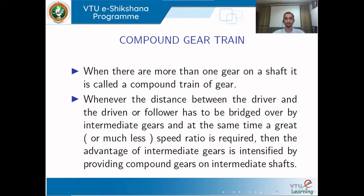In a compound gear train, when you need to transmit power from one shaft to another with a large speed reduction and the distance between the two shafts is also large, we provide more than one gear on a single shaft. Such an arrangement, where more than one gear is used on the same shaft to transmit power from the initial gear to the final gear, is called a compound gear train.